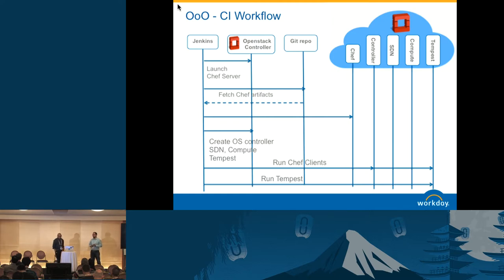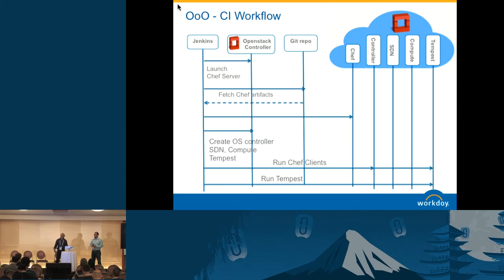This model also let us test how the bare-metal cloud performs. As developers were creating new patches and we had parallel Jenkins builds, there were times with twenty of these jobs running simultaneously — all spawning VM clouds at the same time. So we were exercising our undercloud and seeing how OpenStack performs. We've seen some issues, and the philosophy we follow is 'eat your own dog food,' which let us resolve minor issues early.